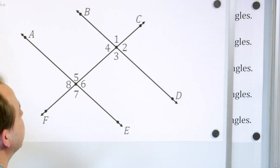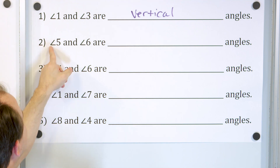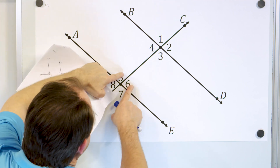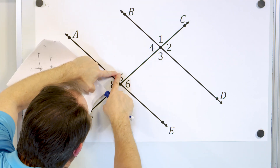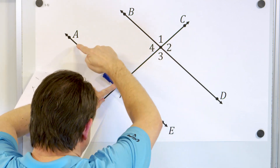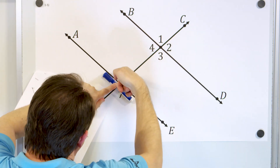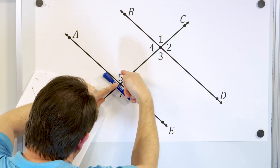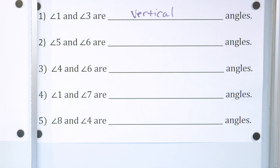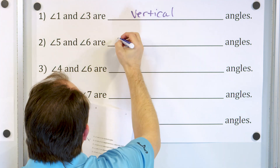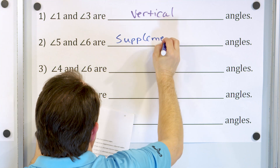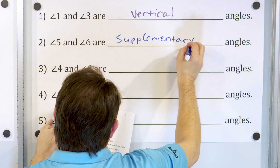Let's take a look at problem number two. Angle five and angle six are what kind of angles? These are not vertical because they're not across from each other. If you look at the line and the line that cuts through it, angle five and angle six are right next to each other. These have two different names — the most common name is called supplementary angles. You might also see them called adjacent angles.